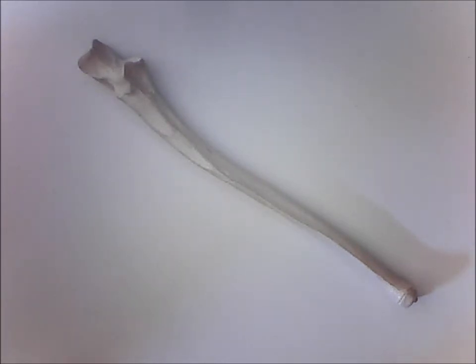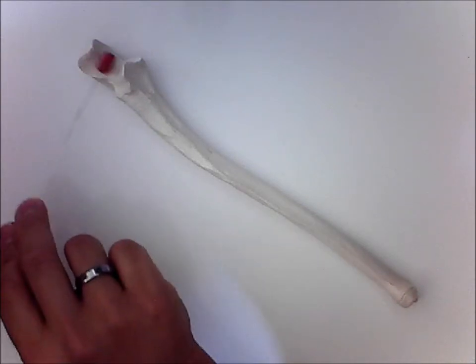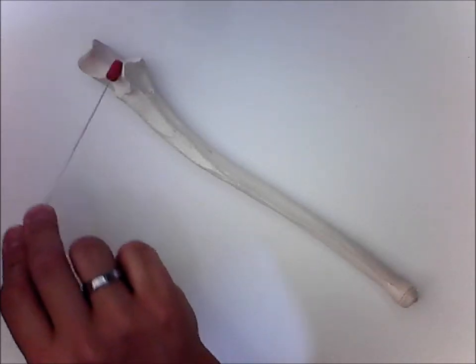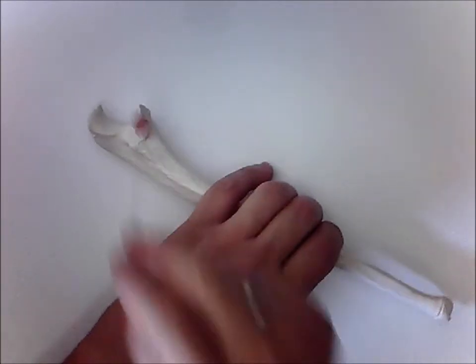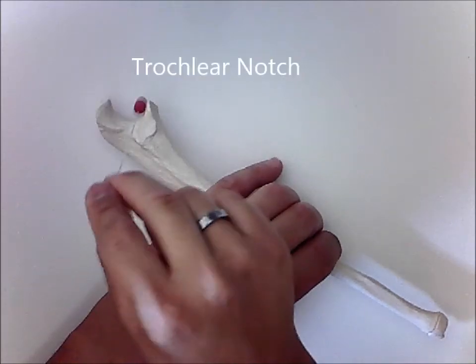Landmarks that you need to be able to identify. The first landmark is this C-shaped landmark here. This is called the trochlear notch.